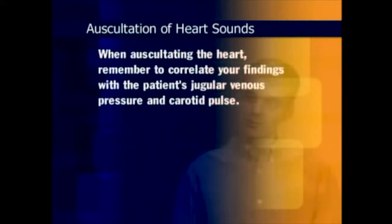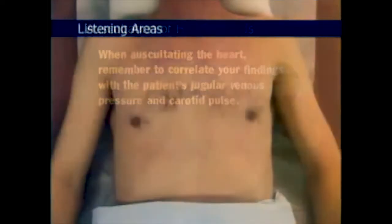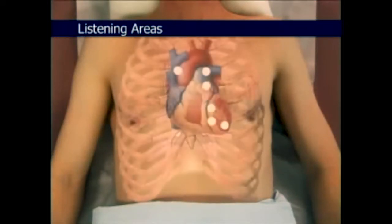When auscultating the heart, remember to correlate your findings with the patient's jugular venous pressure and carotid pulse. You will listen for S1 and S2 in each of the six listening areas.